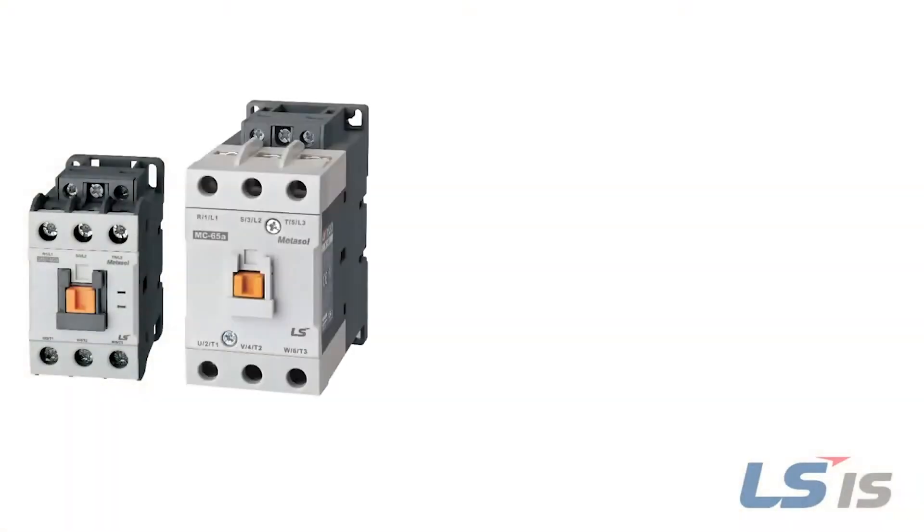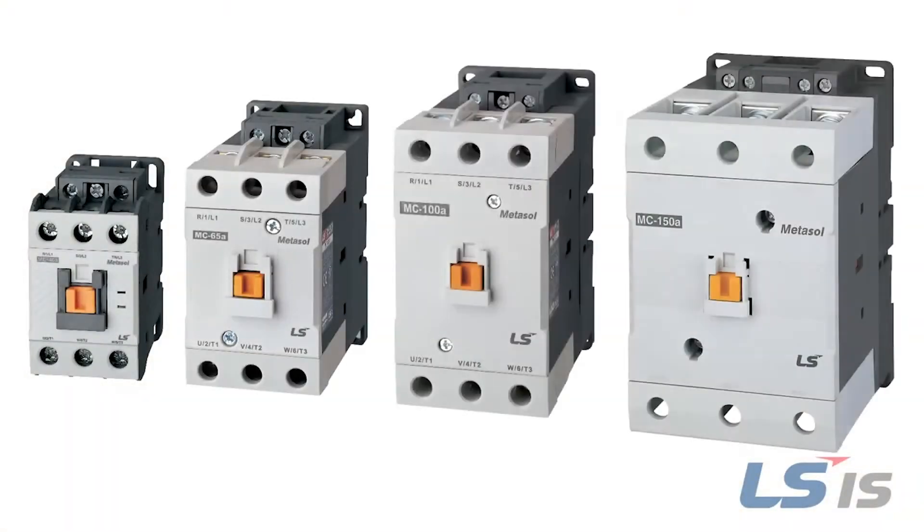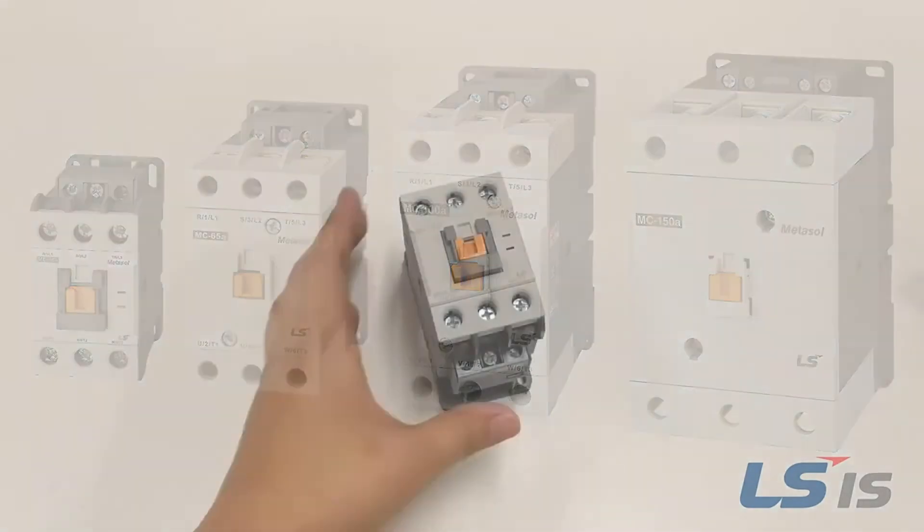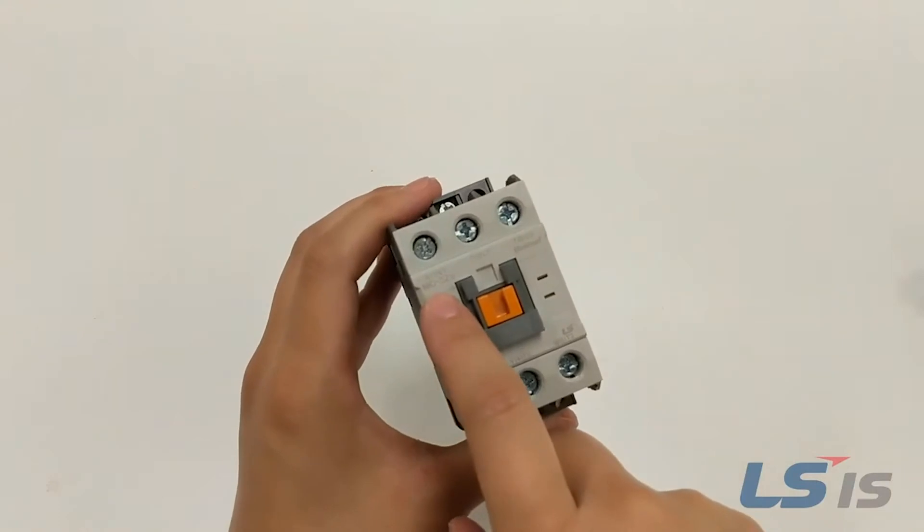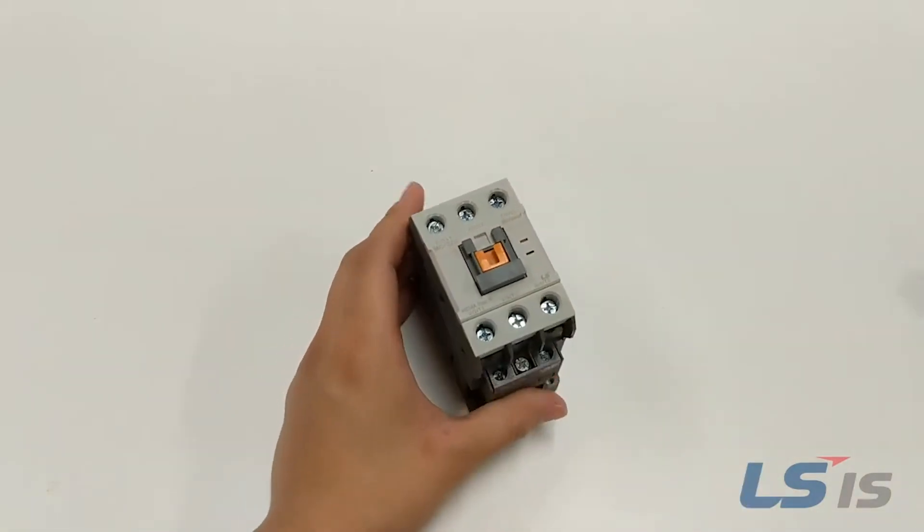For the MC 40M frame to 150M frame contactors, remove the contactor from the box and set on a flat surface. Remove any auxiliary contact units and cut any nameplate labels along the seam of the contactor.